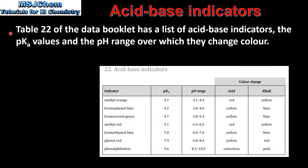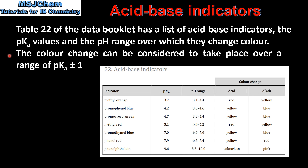Table 22 of the data booklet has a list of acid base indicators, the pKa values and the pH range over which they change color. The color change of an indicator can be considered to take place over a range of the pKa value plus or minus 1 unit. For example, the pKa of methyl orange is 3.7 and the pH range over which it changes color is 3.1 to 4.4, which is approximately the pKa value plus or minus 1 unit.